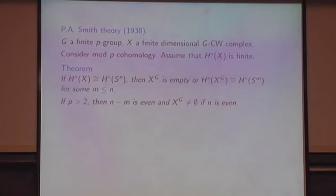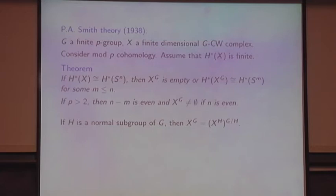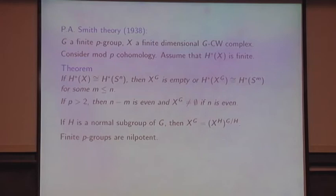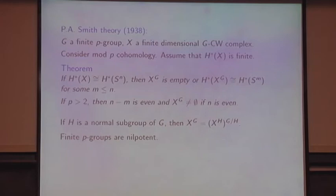This theorem has an incredibly simple proof using Bredon cohomology, which I want to show you in essentially complete detail. First of all, if you have a normal subgroup of G, you can look at the quotient group, and see directly that the G fixed points are obtained by taking the H fixed points and then taking the G mod H fixed points of those. Using the fact that finite p-groups are nilpotent, you see by induction on the order of G that we can assume without loss of generality that our group G is cyclic of prime order.